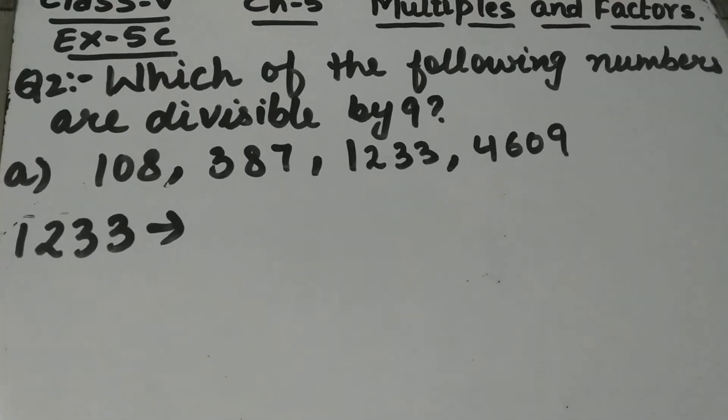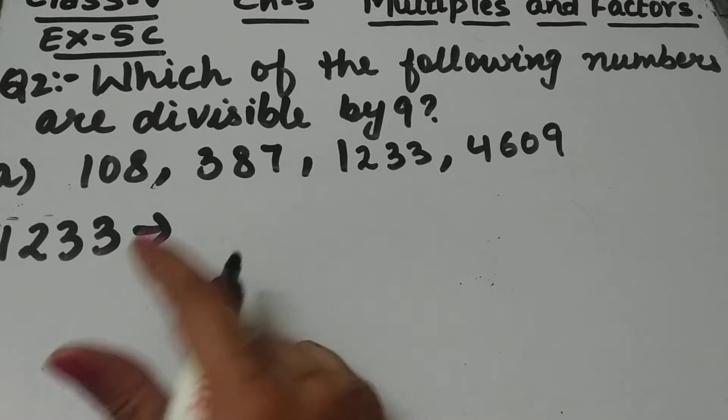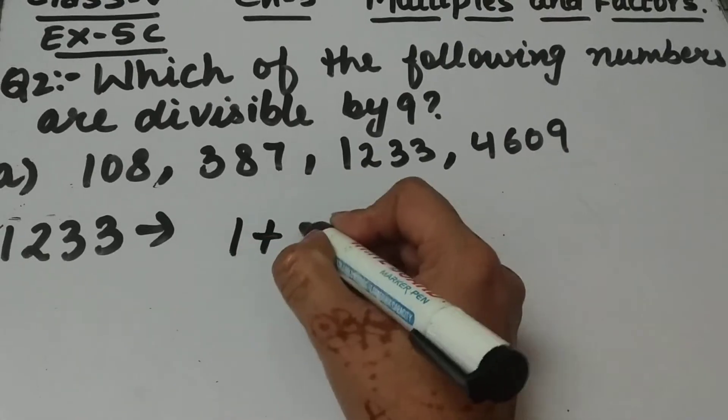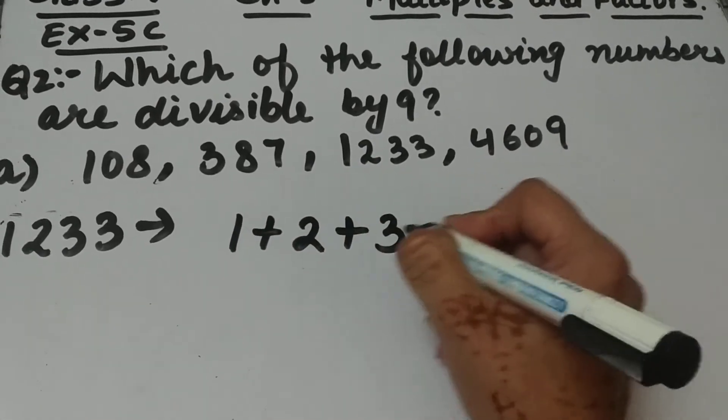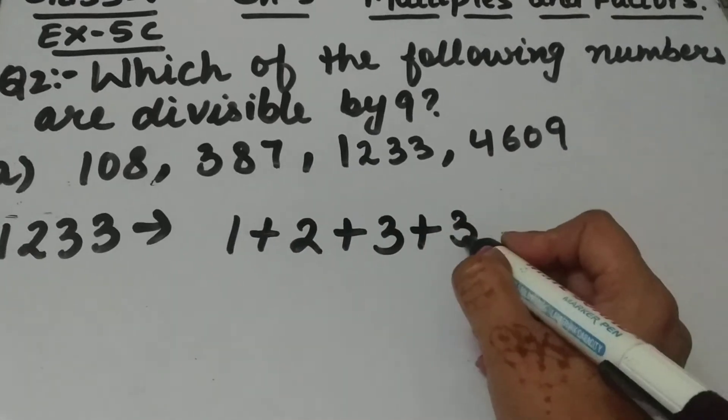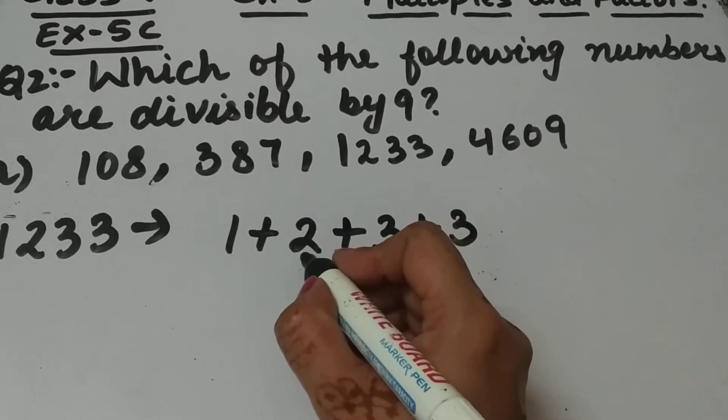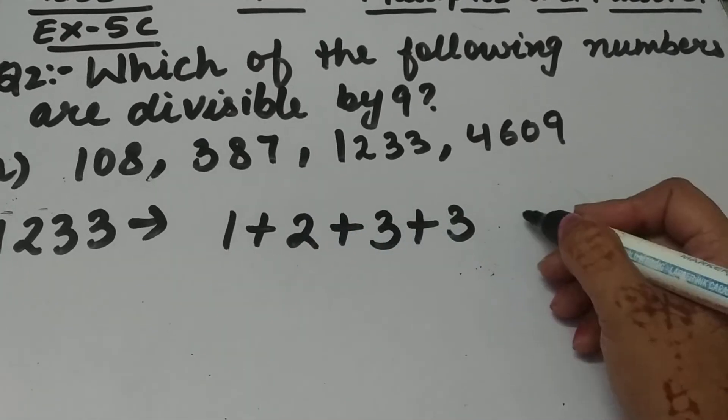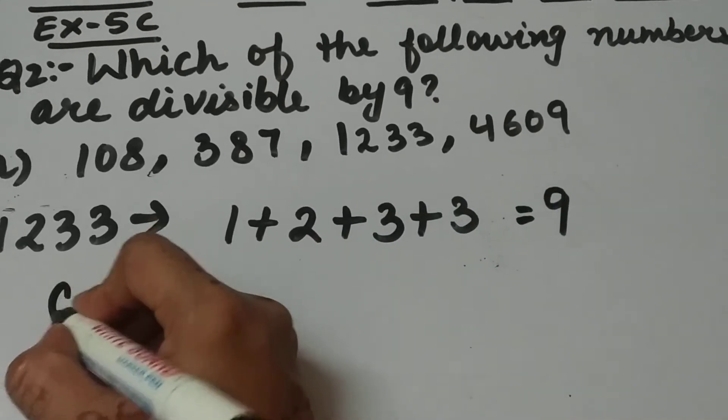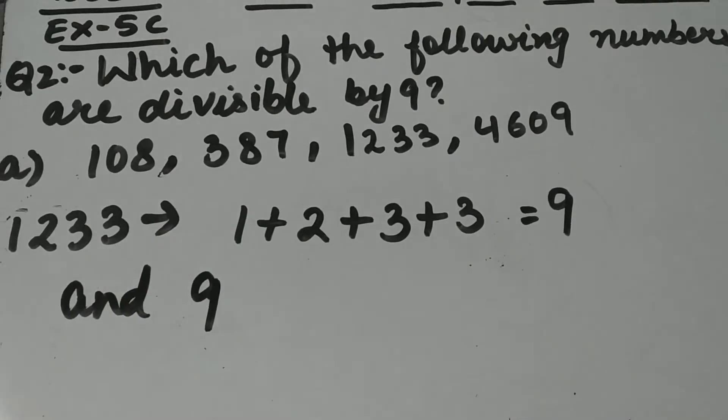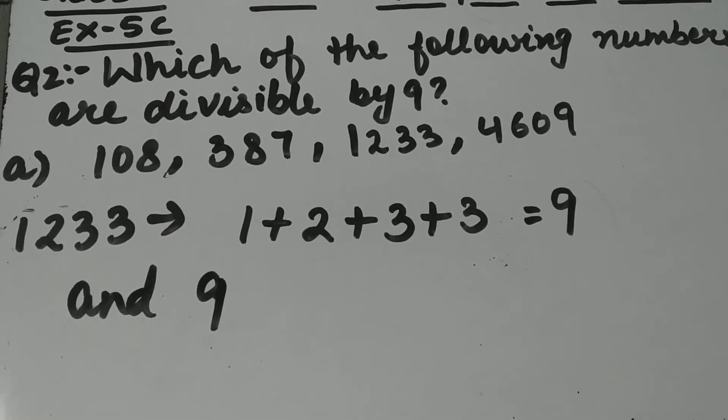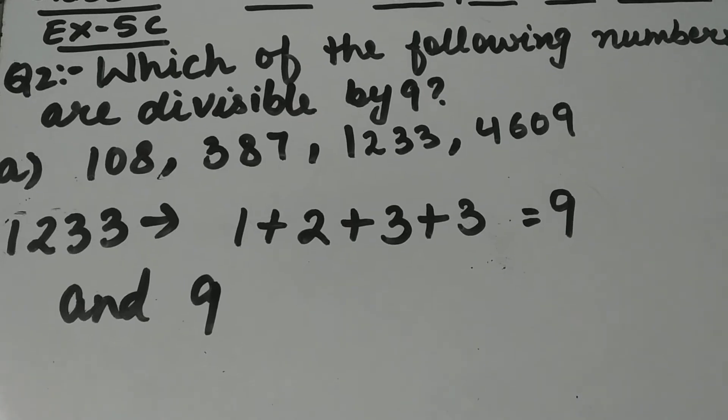The third number is 1233. Add the digits: 1 plus 2 plus 3 plus 3. 3 plus 3 is 6, 6 plus 2 is 8, and 8 plus 1 is 9. 9 is divisible by 9, so 1233 is also divisible by 9.